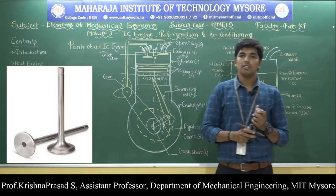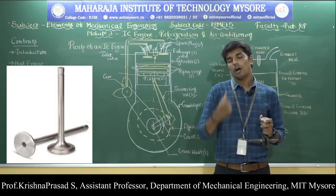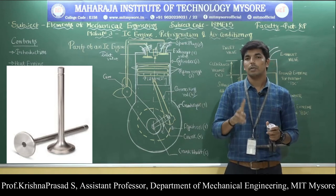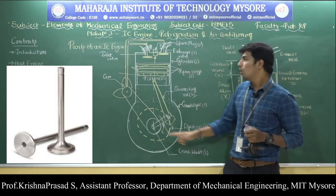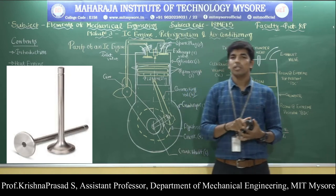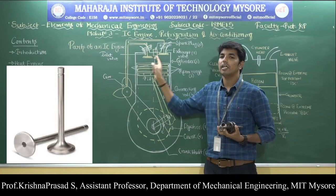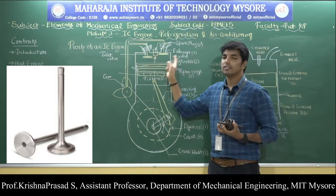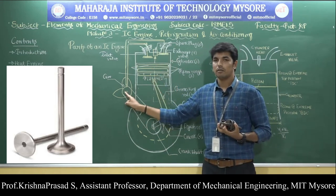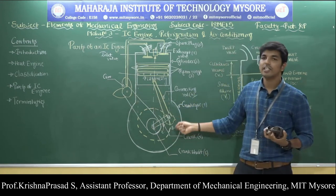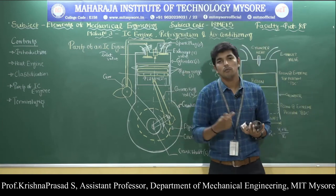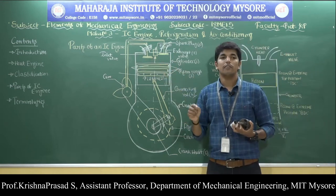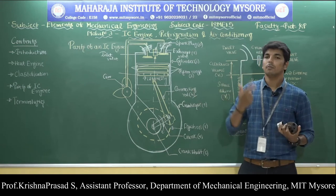The seventh part is the valves — these are poppet valves. They are used to allow the air-fuel mixture to enter the engine cylinder and to eliminate exhaust gases from the engine cylinder. There are two types: inlet valve and exhaust valve. The inlet valve allows the air-fuel mixture to enter the engine cylinder. The exhaust valve allows the burnt gases to escape from the engine cylinder during the exhaust stroke. The inlet valve and exhaust valve are operated with the help of the camshaft, which receives power from the crankshaft itself.